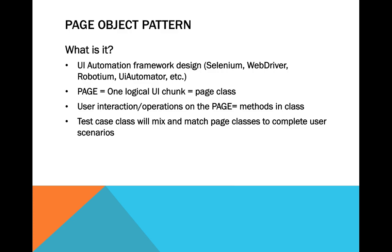You can think of it as a wrapper around this generic API — you define a class that wraps the generic API and provides the business aspect. For the page, I define it as one logical UI chunk. Nowadays web applications are Ajax-rich single-page applications, so a logical UI chunk is a logical piece the user can interact with or that has some specific feature. Once you define that logical UI chunk, it becomes a class — like a login page class.